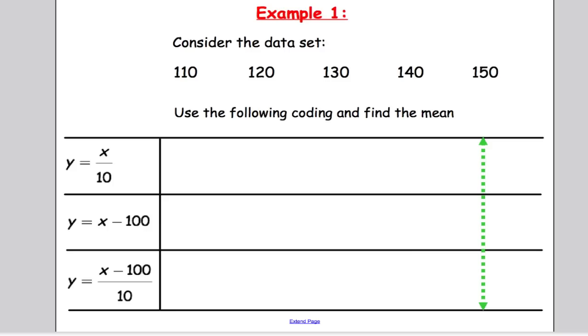Let's crack on and have a look at an example. First one here, we've got a data set and it says use the following coding and find the mean. This is the coding I'm going to use. So each data point x I'm going to divide by 10 to get the corresponding y. So 110 divided by 10 is 11, 120 divided by 10 is 12, we get 13, 14, and 15.